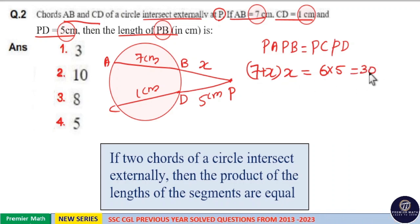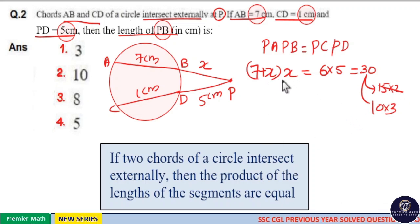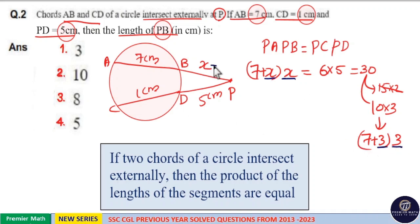7 plus X into X equals 30. Now 30 can be written as 15 into 2 or 10 into 3. But 15 into 2 cannot be written as 7 plus X into X. However, 10 into 3 can be written as 7 plus 3 into 3. Now you can see X is equal to 3. So your answer is option 1.